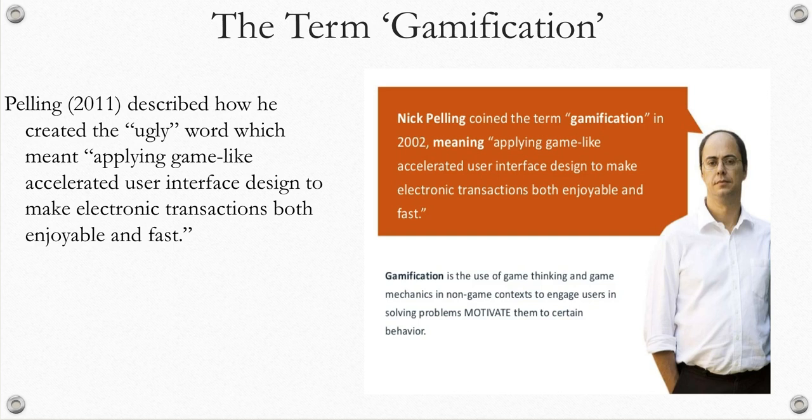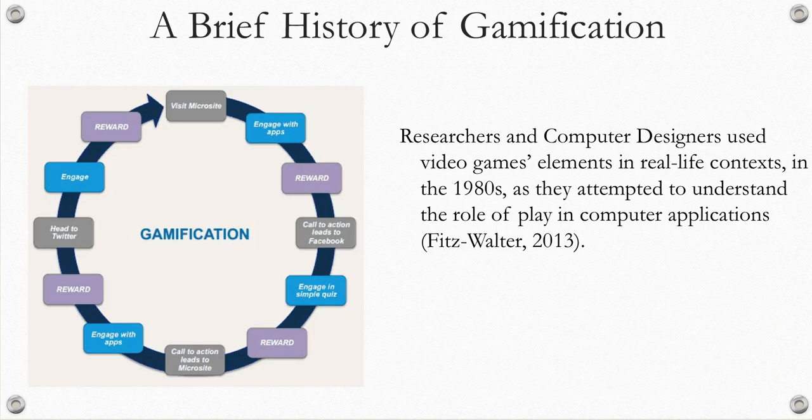He founded a company that eventually went bankrupt for lack of interest in the topic, but things have changed now and there is a lot of interest. In the 1980s, computer researchers and designers wanted to understand the role of play in computer applications and started using video game elements in real-life contexts. Some of the video game elements transferred into real-life contexts were challenge, collaboration, real-time feedback, scaffolded learning, and progress signposts such as badges, points, and leaderboards. Please notice the extensive use of rewards in this diagram.